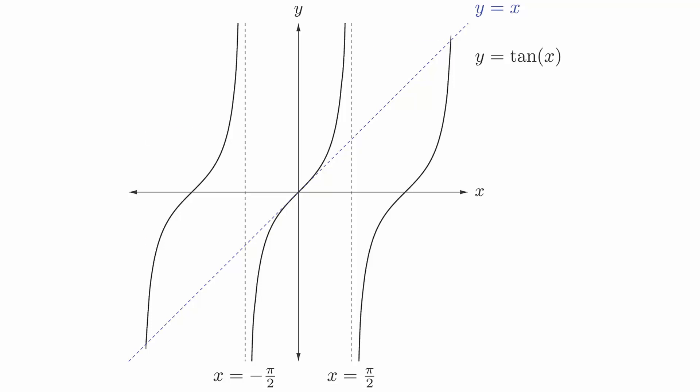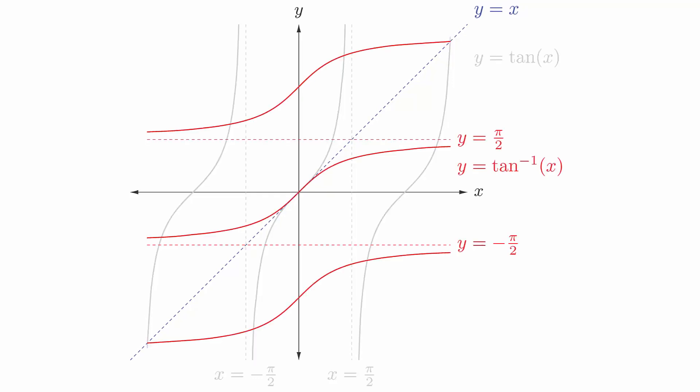The inverse tangent function is different because it extends from negative to positive infinity. We still have the problem of repeated values, so we will restrict the inverse to just the connected piece that passes through the origin.